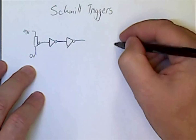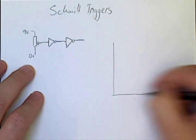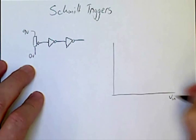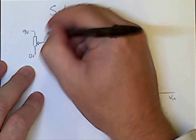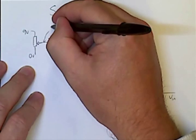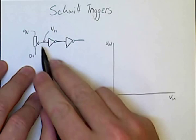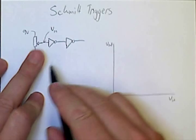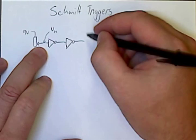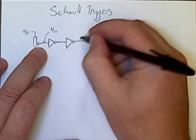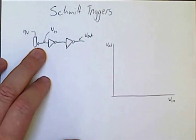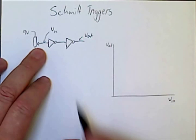If I were to graph what this looked like, my input voltage and my output voltage, so I'll label those on my graph here. My circuit V_in is the voltage on the input pin of this first inverter, and the output voltage is the voltage on the output pin of the second inverter, so the output of our buffer circuit.